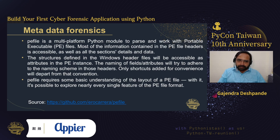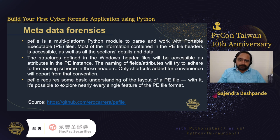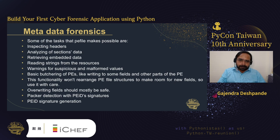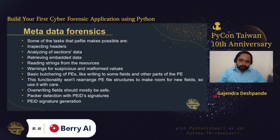The next module is pefile — a multi-platform Python module to parse and work with Portable Executable (PE) files. While PE files are mostly related to the Windows operating system, you can analyze and get information on any platform. The structure defined in Windows header files will be accessible as attributes in the PE instance, with naming adhering to those headers' naming schemes. Tasks possible with pefile include inspecting headers, analyzing section data, retrieving embedded data, reading strings from resources, and generating warnings for suspicious or malformed values.